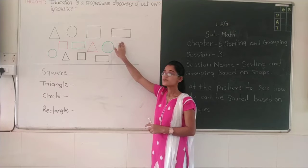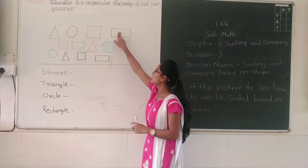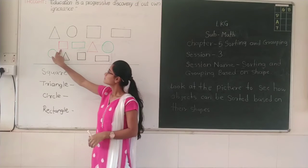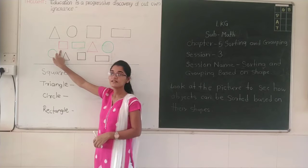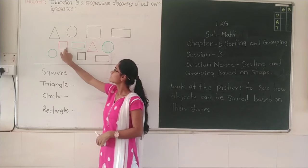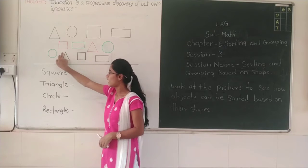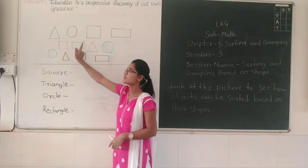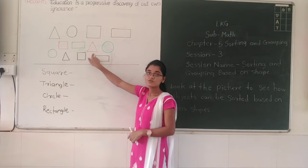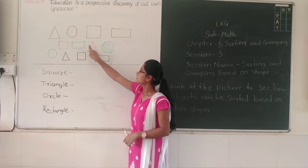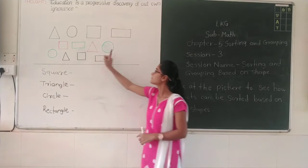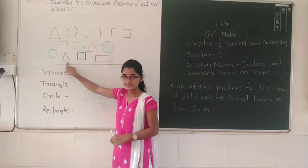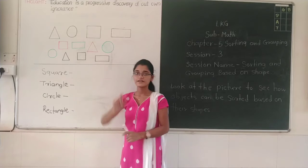Next one has four corners and opposite sides are equal, so this is rectangle. Now look at here — which shape is this? Square — four corners, four equal sides, so this is square. The next one has four corners and opposite sides are equal, so this is rectangle. Then next one is three corners, three sides, so this is triangle. This is circle. One more circle. Triangle, square, and rectangle.